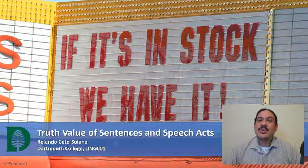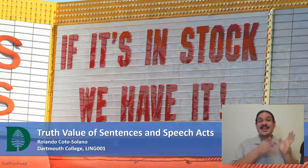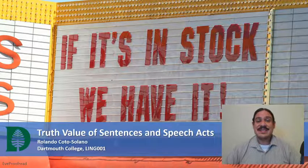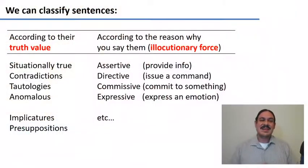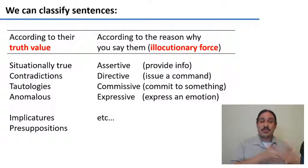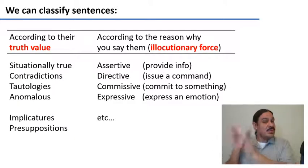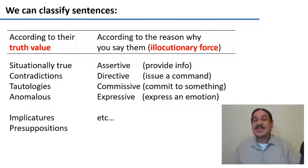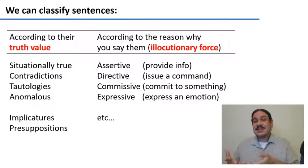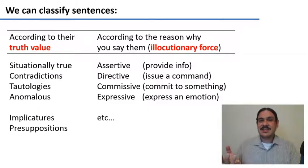Let's continue our study of pragmatics. We're going to look at the truth value of sentences and at speech acts, and we're going to look at sentences like 'if it's in stock, we have it.' We can classify sentences in two different ways: according to their truth value, whether they are true or not, and what kind of information we can suppose from them. We could also classify sentences by why we said them — maybe to give information, to ask for something, or to say thank you. All of these reasons are called the elocutionary force of a sentence, and in general we call all these speech acts.